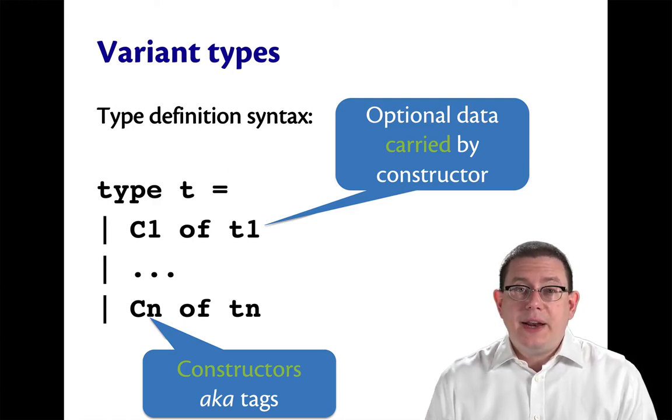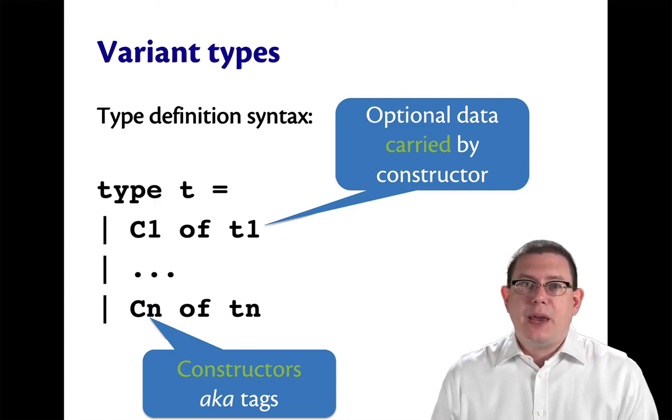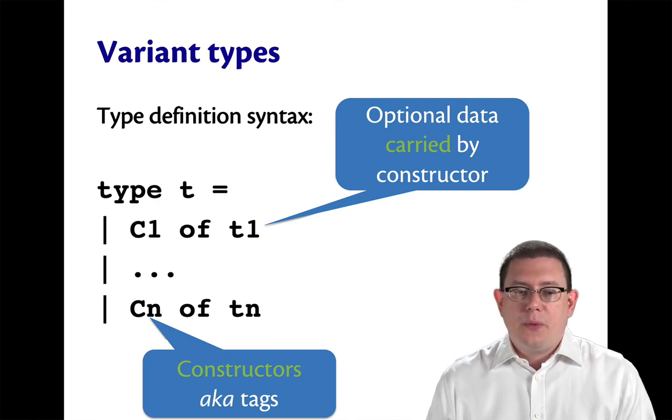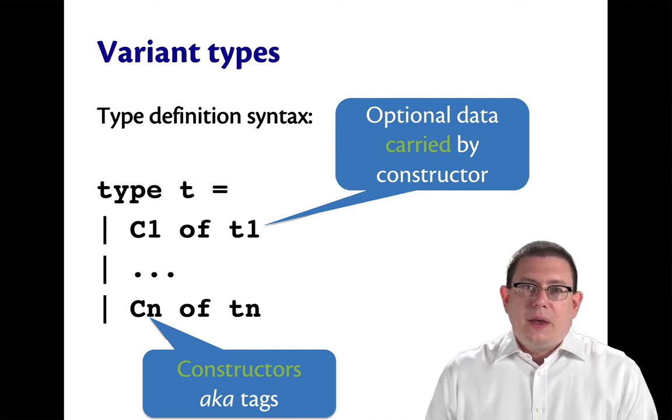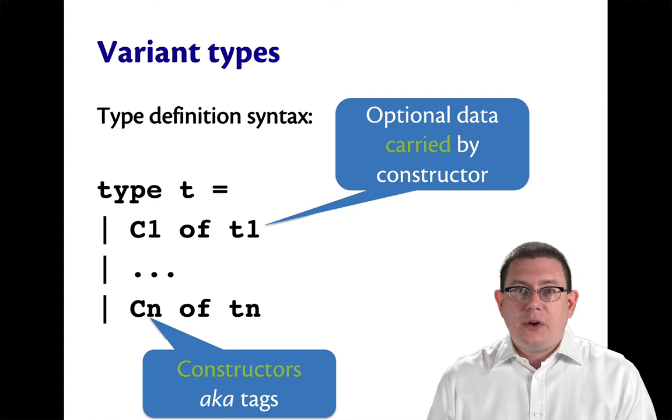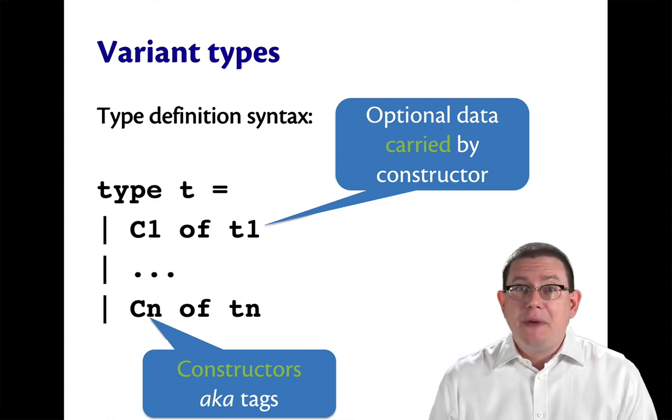So the syntax for defining a variant type uses the type keyword, just as we saw before for records. The type definition here though doesn't use curly braces. It uses something that looks a lot like pattern matching syntax.